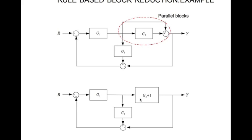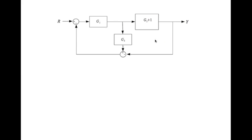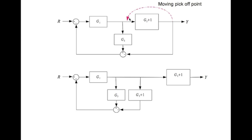Now let's look what else can we do. What about moving this pick off point from here to here? If I do that then that signal needs to get multiplied by the transfer function. That's what I've done here. And this is the configuration.